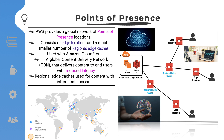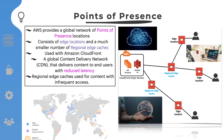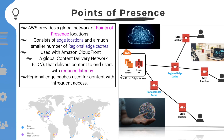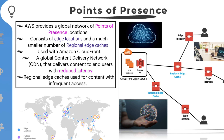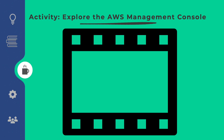Regional edge caches are used by default with Amazon CloudFront. They are used when you have content that is not accessed frequently enough to remain in an edge location. Regional edge caches absorb this content and provide an alternative to that content having to be fetched from the origin server.